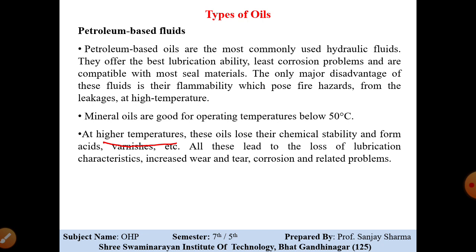Operating above 50 degrees Celsius leads to loss of lubrication characteristics, increased wear and tear, and corrosion-related problems. Petroleum-based oil is best used below 50 degrees Celsius. If used above 50 degrees Celsius, all these problems occur: formation of acid, formation of varnish, loss of lubrication characteristics, increased wear and tear, and increased corrosion in the hydraulic system.